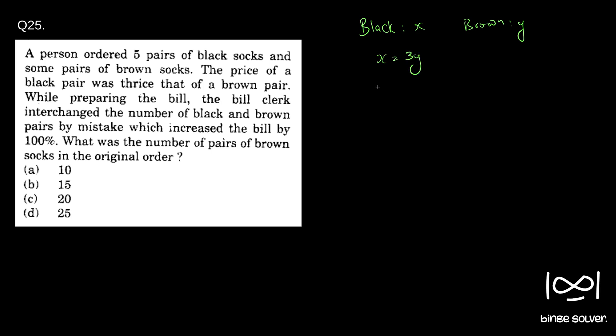Now while preparing the bill, the bill clerk interchanged the number of black and brown pairs by mistake. So it is given initially a person ordered five pairs of black socks. The bill clerk interchanged the number of black and brown pairs by mistake which increased the bill by 100%. What was the number of pairs of brown socks in the original order?